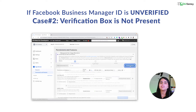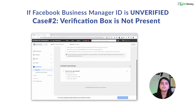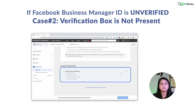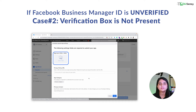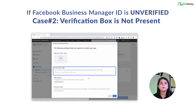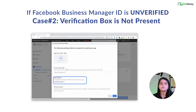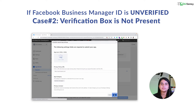Then the screen will be refreshed, and after scrolling down, you can see the option to review your app settings. Click on Review Your App Settings and fill in the details. App icon can be added in later stages. First, enter your website's URL. Copy and paste the website's URL in the Privacy Policy URL field, choose the category as Business and Pages, and click on Save.